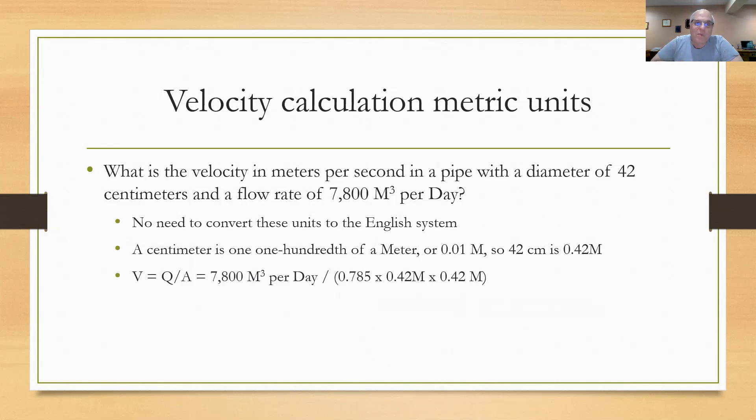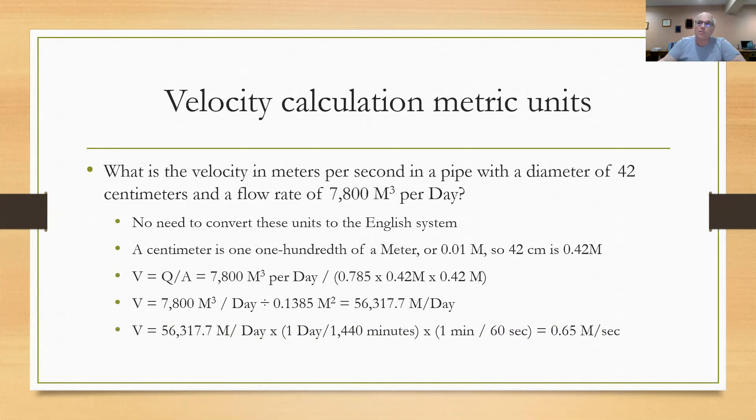V equals Q over A. I've got 7800 cubic meters per day divided by the square area. I calculated the square area by multiplying 0.785 times 0.42 meters times 0.42 meters, which gives me square meters in the bottom. So V equals 7800 cubic meters per day divided by 0.1385 square meters, or 56,317.7 meters per day. If I want that in meters per second, I multiply by one day over 1440 minutes and one minute over 60 seconds. Everything cancels out leaving meters per second and I come up with 0.65.